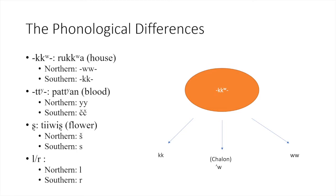The last pair we will be looking at is L versus R. It is not entirely clear what the proto-Kostanoan choice would have been, but typically Northern Ohlone takes the L and Southern Ohlone takes the R — not the English R, but more like the Spanish R. So those are the four phonological differences we will be examining. Here is a visual: you can see the double-K on one side, the double-W on the other, and Chalon in the middle, because it is transitional.